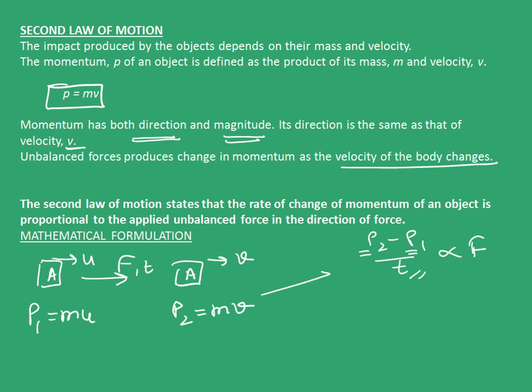So, putting it in this formula, so that there is the second law of motion, we see is m, v minus u upon t is directly proportional to f. Now, this v minus u upon t can be written as acceleration, a, that is, rate of change of velocity.